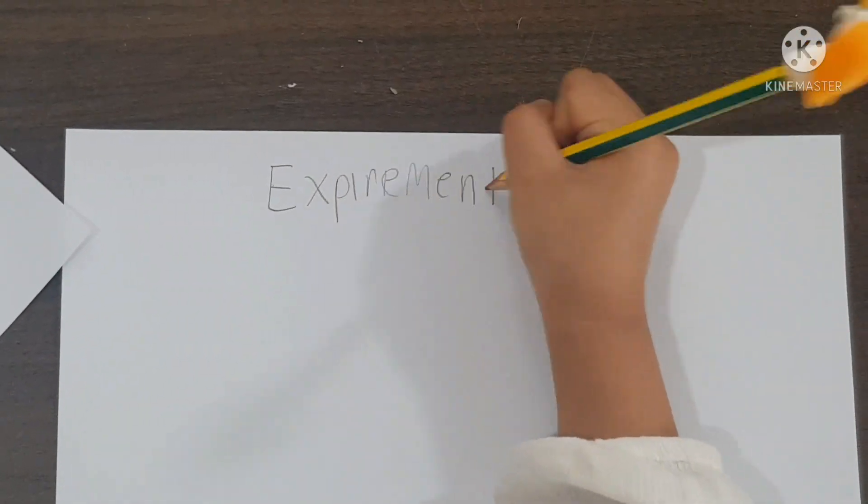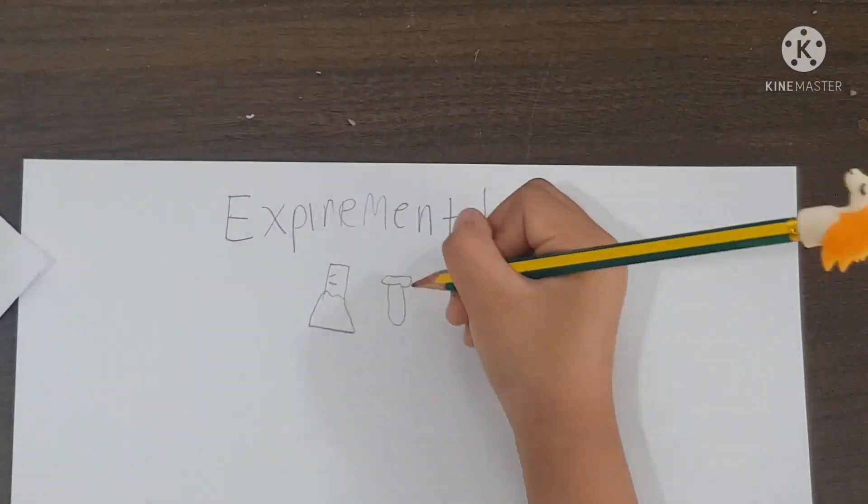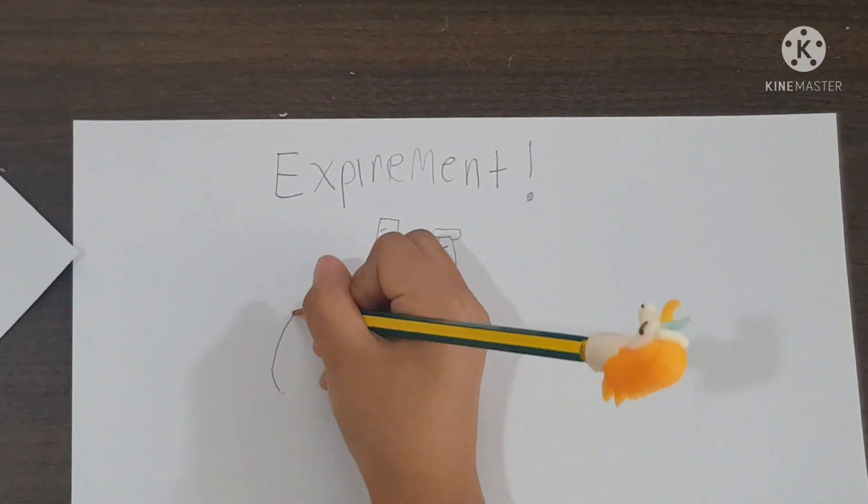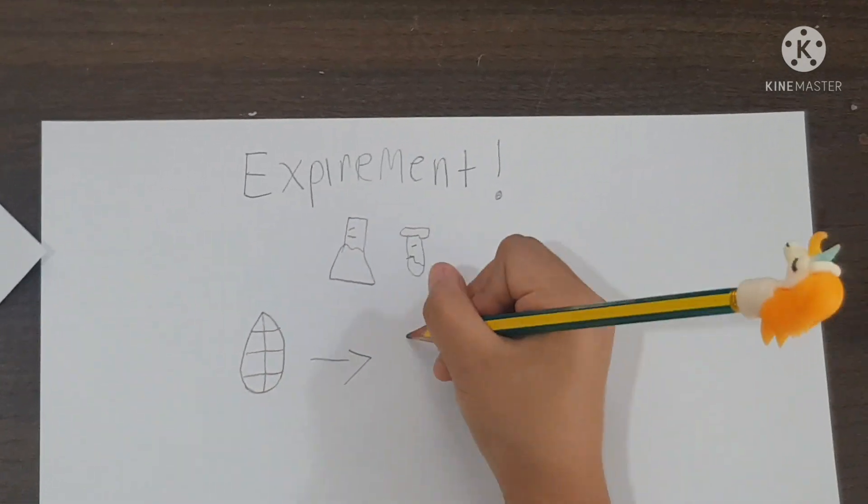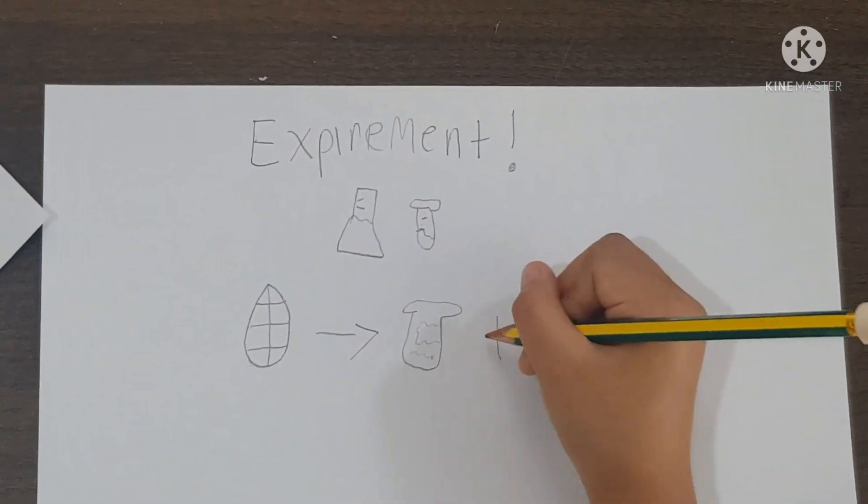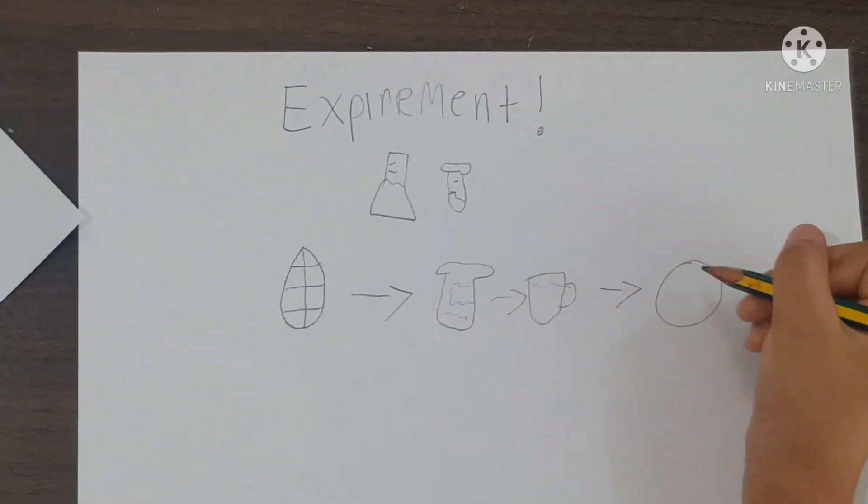This time, an experiment! What you need is a leaf, plaster of Paris, water, and then a plate.